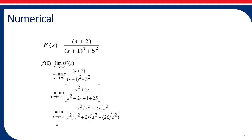How to evaluate in such a case? We have to take the highest degree term common from the numerator and the highest degree term common from the denominator and cancel them out. If the degrees of numerator and denominator are the same, it will attain a finite value. Taking s² common from the numerator and s² common from the denominator and cancelling, what is left is (1 + 2/s) in the numerator and (1 + 2/s + 26/s²) in the denominator. Substituting s → ∞, the terms 2/s and 26/s² tend to 0, and the answer comes out to be 1.